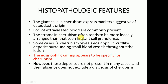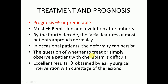The loosely arranged stroma is one characteristic that can differentiate cherubism from giant cell granuloma. In some cases, cherubism reveals eosinophilic cuff-like deposits surrounding small blood vessels throughout the lesion, which is specific to cherubism. However, in many cases these deposits may not be present, so the absence of eosinophilic cuffing does not exclude the diagnosis of cherubism.